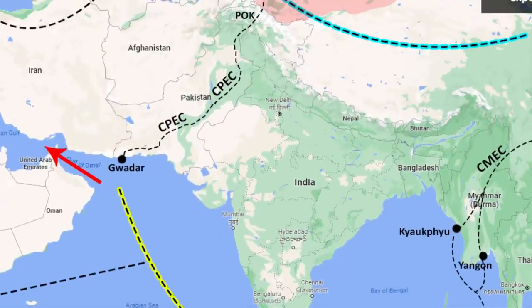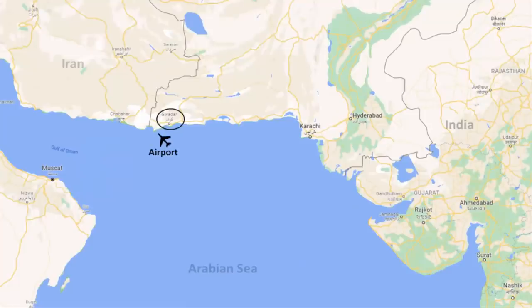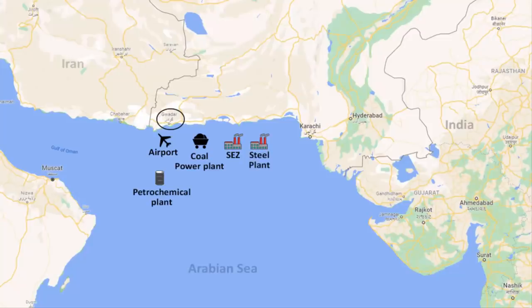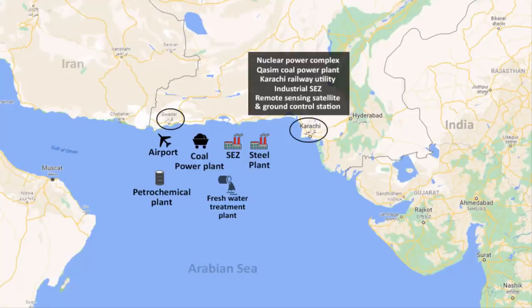The whole Gwadar city in Pakistan has been developed by the Chinese. It has an airport, coal power plant, industrial economic zone, steel plant, petrochemical plant and a freshwater treatment plant. Similarly, at Karachi seaport, there is a nuclear power complex, Kasim coal power plant, Karachi railway utility, industrial economic zone, and a Pakistan remote sensing satellite and ground control station. Even the KT Bandar seaport has been developed by the Chinese.